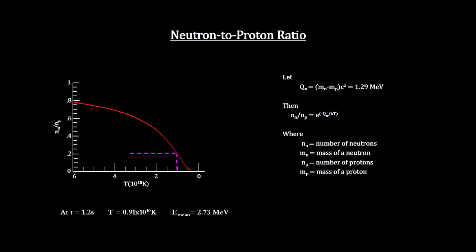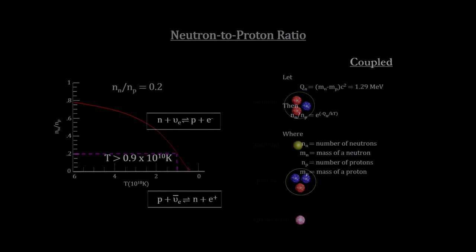At that point, two things happened. One, without neutrino interactions, the ratio of neutrons to protons froze. Computations show that at the time of neutrino decoupling, the ratio would have been one neutron for every five protons. This neutrino decoupling process would have lasted around one second.